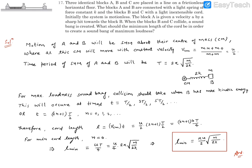Problem 17. It says three identical blocks A, B, and C are placed in a line on a frictionless horizontal floor.